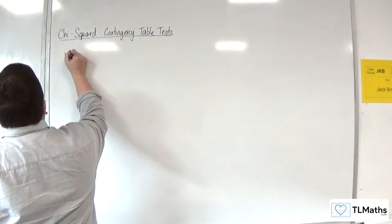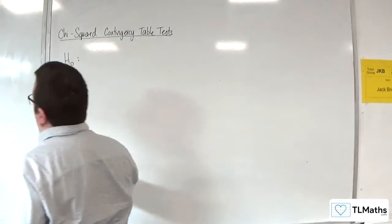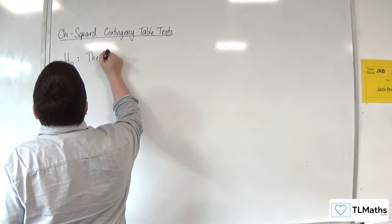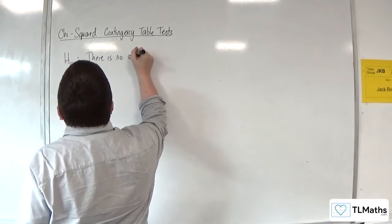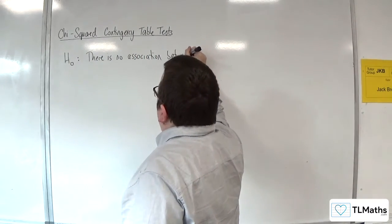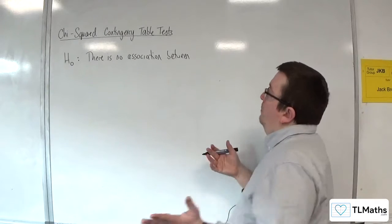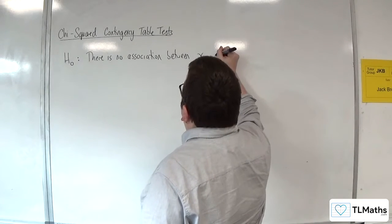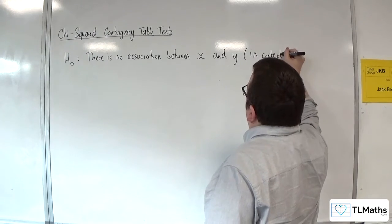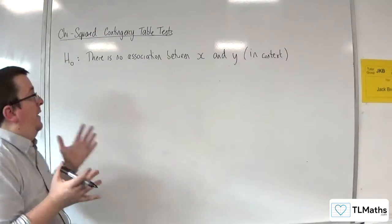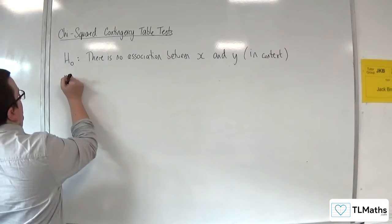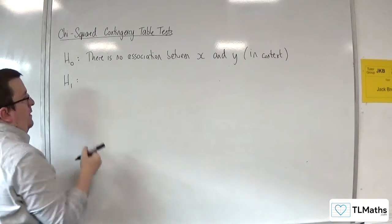There is only one null hypothesis that we will consider, and that is there is no association between the two variables. That would have to be in context, between x and y in context. Our null hypothesis is always the same, so that's easy to remember.